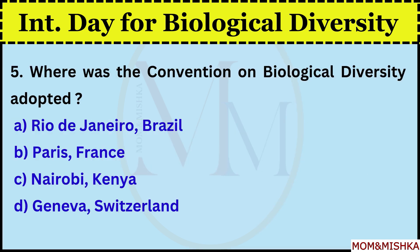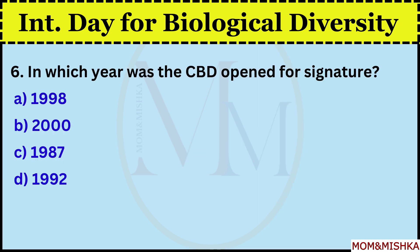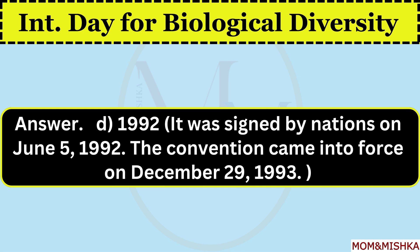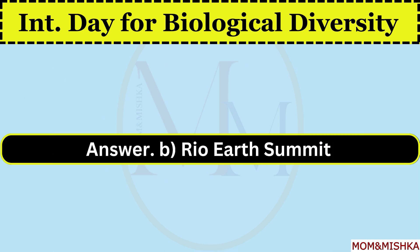Where was the Convention on Biological Diversity adopted? Rio de Janeiro, in Brazil, option A. In which year was the CBD opened for signature? In year 1992, option D. It was signed by nations on 5th June 1992. The Convention came into force on 29th December 1993. Which major Earth Summit introduced the CBD? Rio Earth Summit, option B.